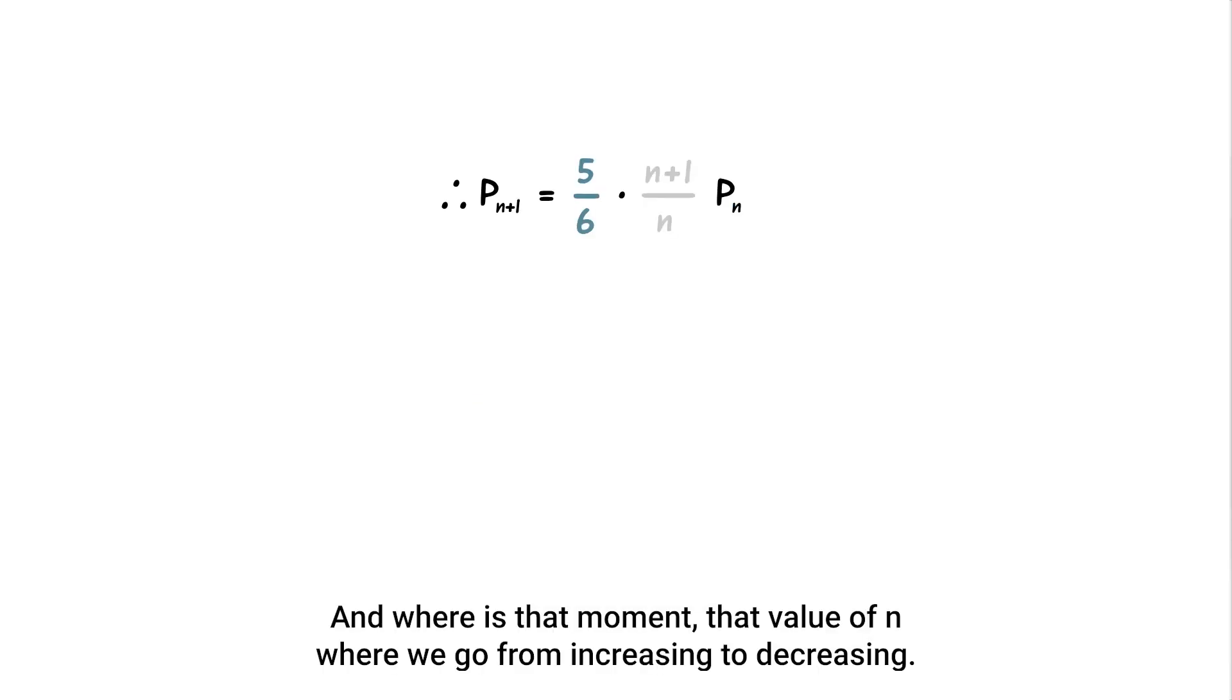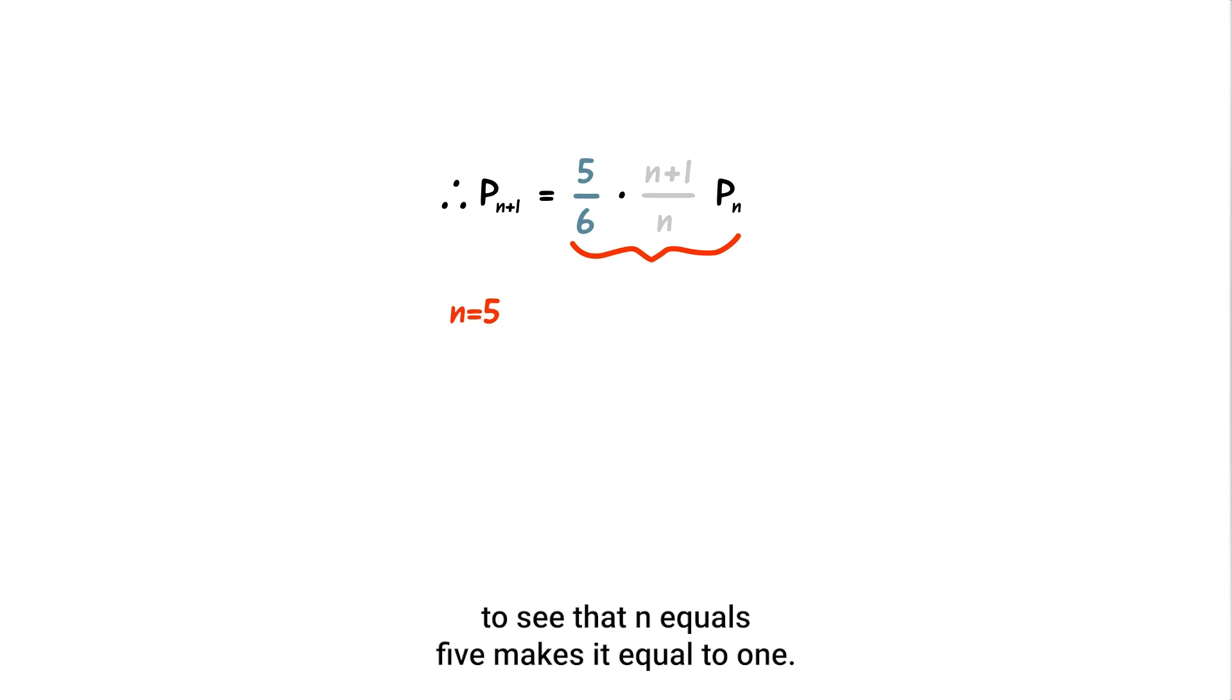And where is that moment, that value of n, where we go from increasing to decreasing? We can basically look at the factor to see that n equals five makes it equal to one.